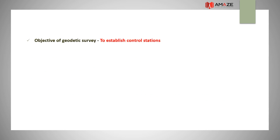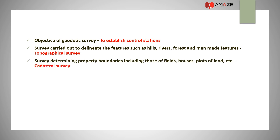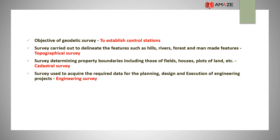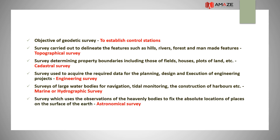The objective of geodetic survey is to establish control stations. The survey carried out to delineate features such as hills, rivers, forests, and man-made features is topographical survey. The survey determining property boundaries including fields, houses, plots of land, etc. is cadastral survey. Survey used to acquire data for planning, design, and execution of engineering projects is engineering survey. The survey of large water bodies for navigation, tidal monitoring, construction of harbors, etc. is marine or hydrographic survey. The survey which uses observations of heavenly bodies to fix the absolute location of places on earth's surface is astronomical survey.